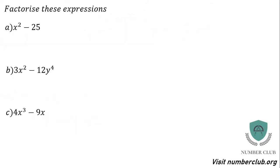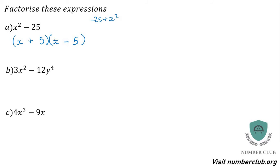You should recognise the difference of two squares from GCSE. For example, x squared minus 25: x squared is a square and 25 is 5 squared, and it's a difference because you have subtraction. If you had negative 25 plus x squared that's still a difference of two squares — just reorder it. You should have just one subtraction symbol. This factorises into two brackets: square root of x squared is x, square root of 25 is 5, giving (x + 5)(x − 5). These brackets are called conjugates.